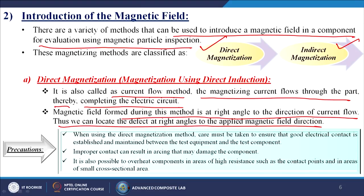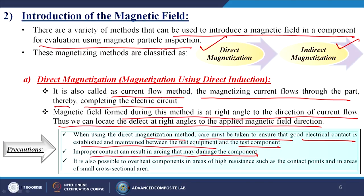If we flow the current in one direction, the magnetic field will be generated perpendicular to it — both are exactly 90 degrees to each other. When using the direct magnetization method, care must be taken to ensure good electrical contact is established and maintained between the test equipment and the test component. Improper contact can result in arcing that may damage the component, because if there is a gap between the terminals, sparks can occur that change the shape of the material. It is also possible to overheat components in areas of high resistance such as the contact points and in areas of small cross-sectional area.